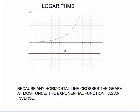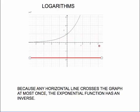Remember, the horizontal line test. Any horizontal line I would draw is only crossing the graph once, or not at all if I put it down here. If the horizontal line crosses the graph at most once, that tells us that the graph of the exponential function has an inverse, and the inverse of that exponential function is called a logarithm.